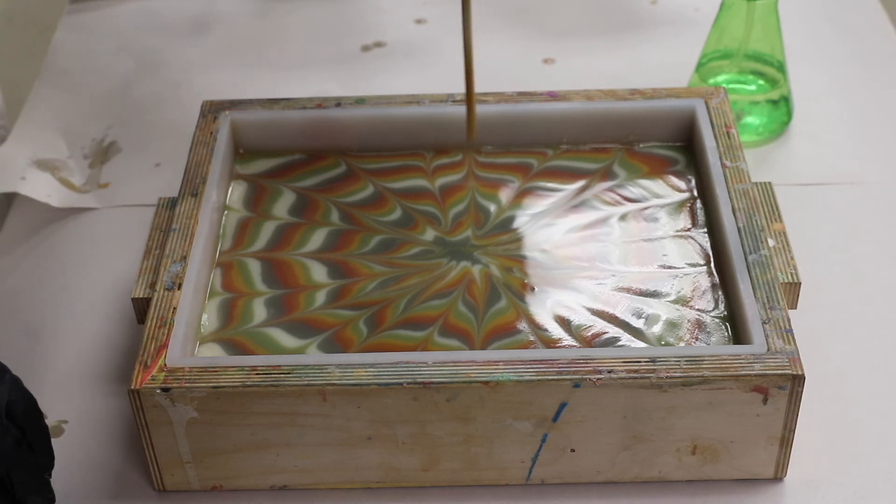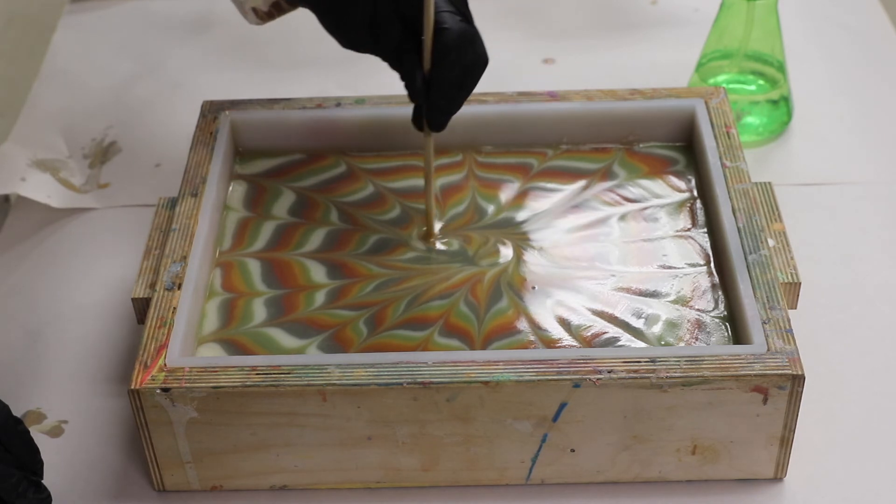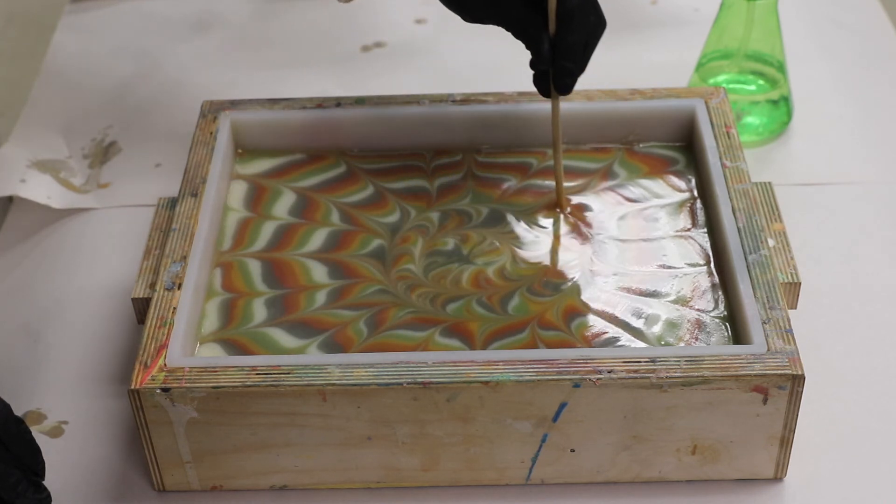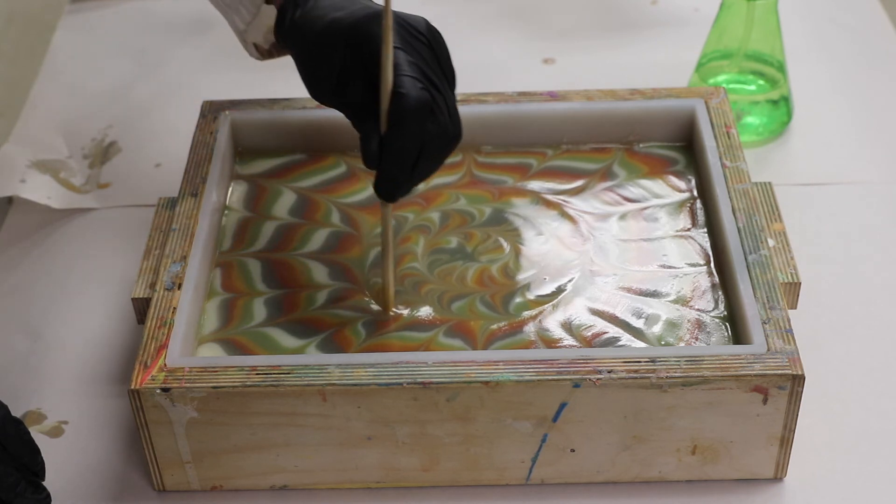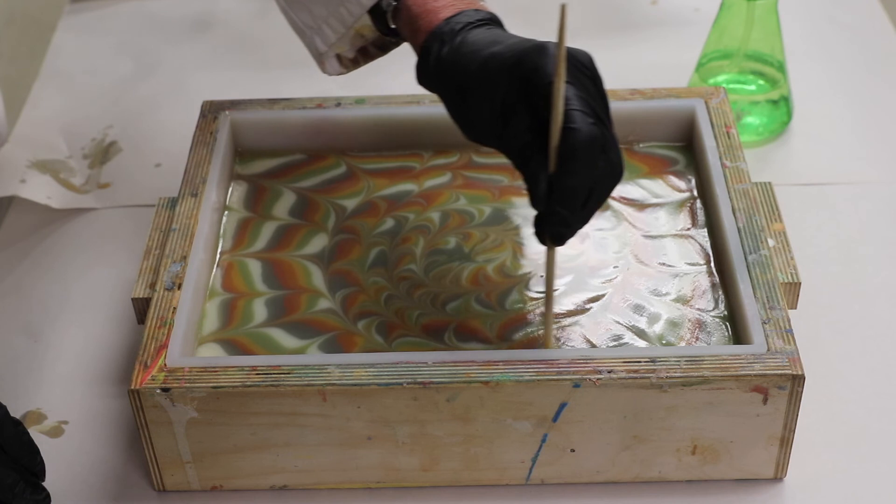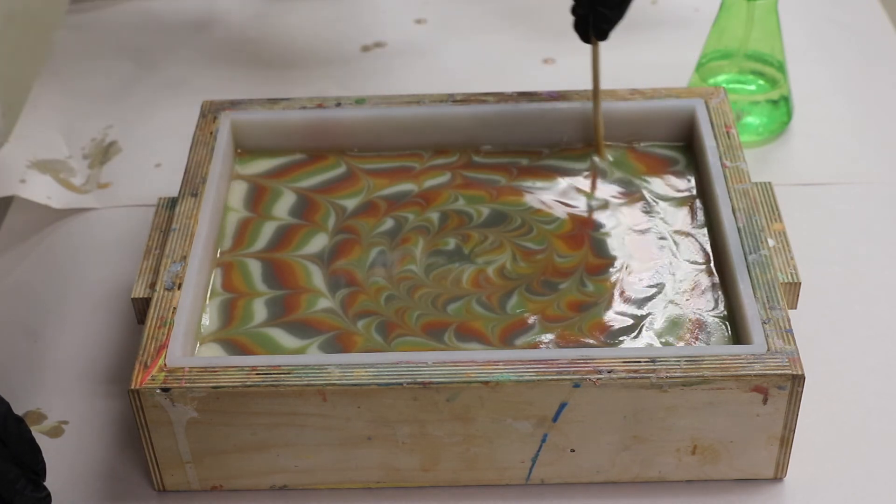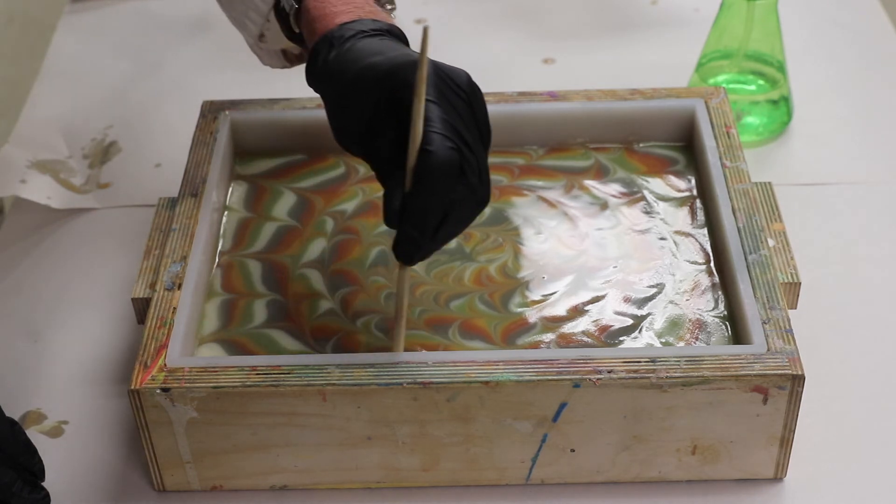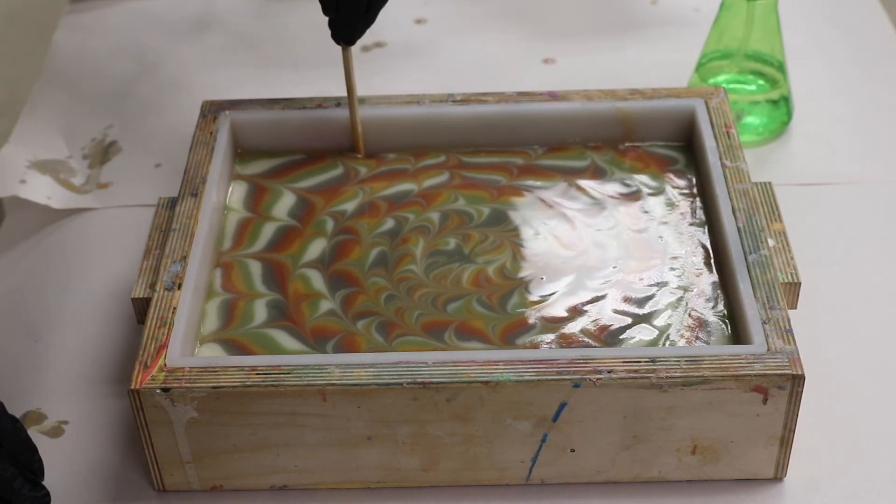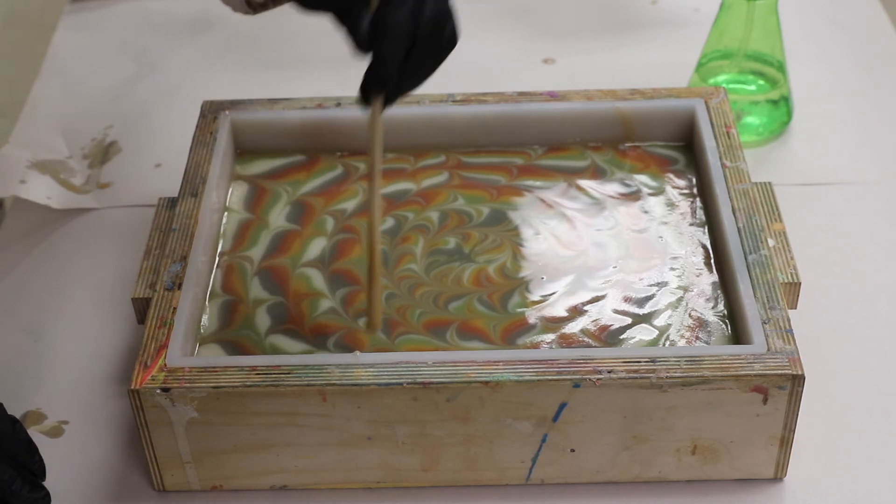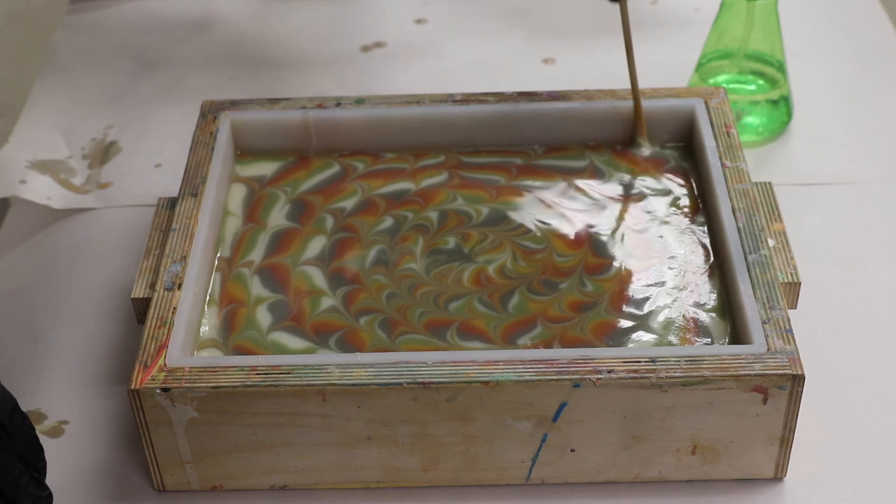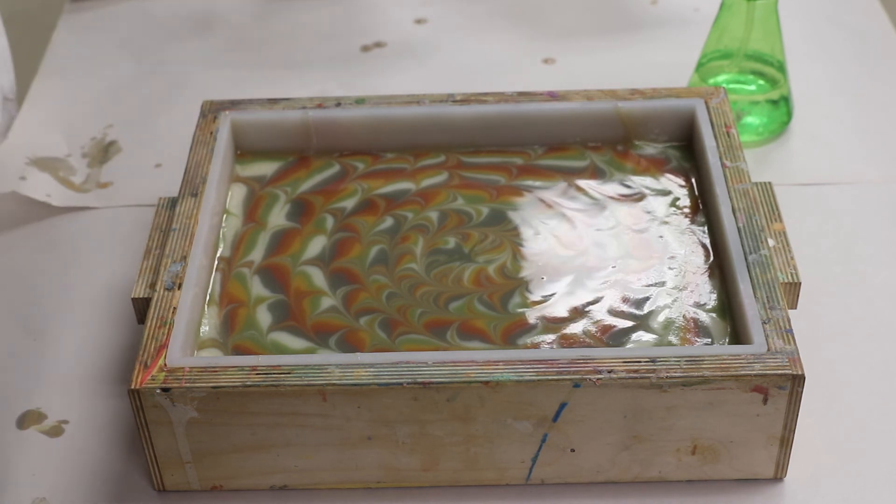And then to do the hurricane swirl, I'll start right in the middle and make spirals, probably three quarters of an inch apart. Again, that's a bit wider than I would normally do a hurricane swirl, but I think I want a little bigger, bolder stripes this time than I've done in the past.